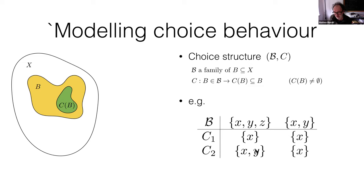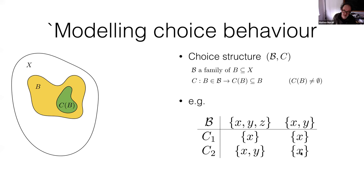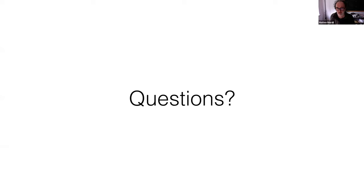C2, however, does not satisfy WARP. In C2, y was selected when x was also available. By WARP, whenever x and y are available and x is chosen, y should also be chosen — but that is not true in C2. So C1 has a consistent revealed preference relation, while C2's choice behavior is not consistent with any preference relation.